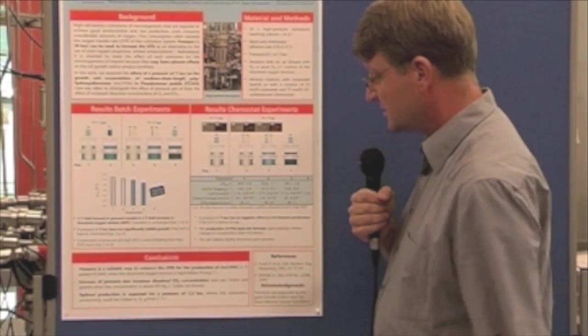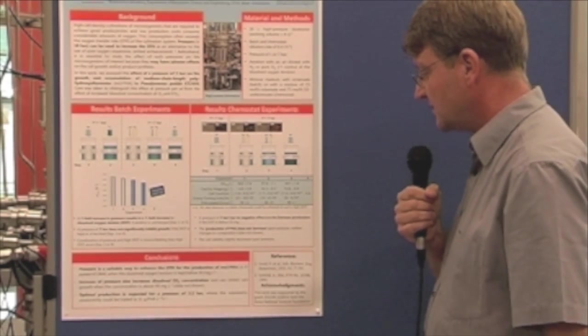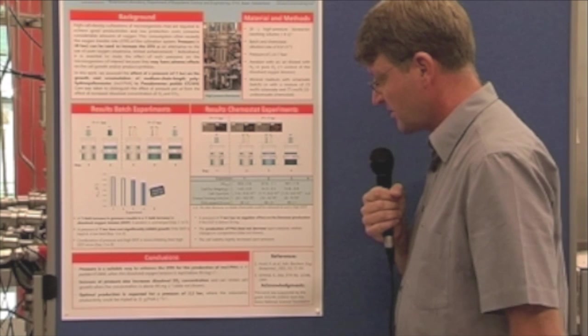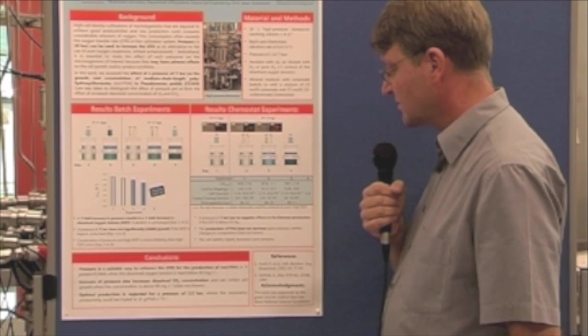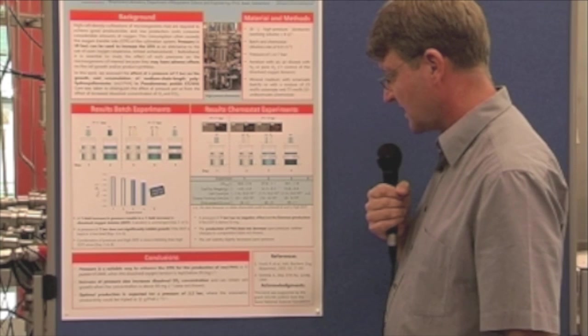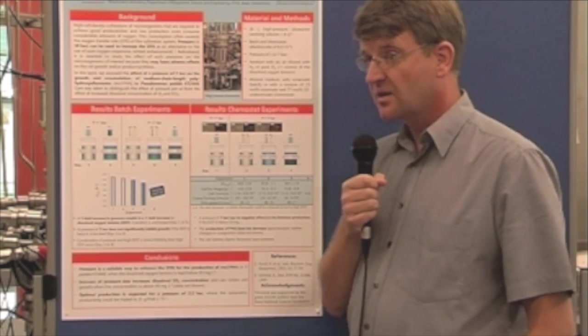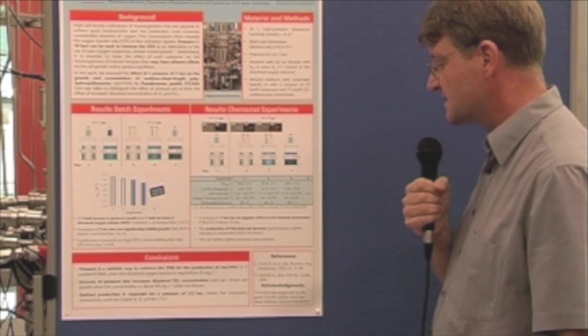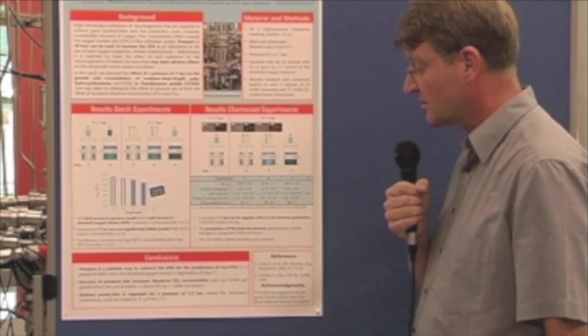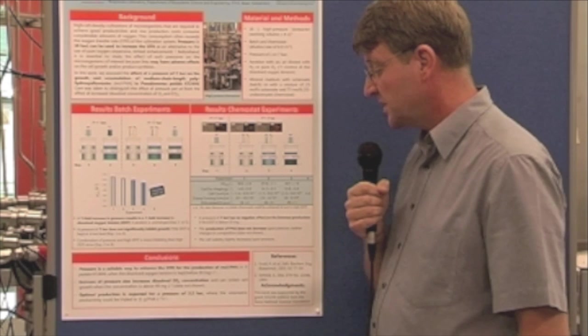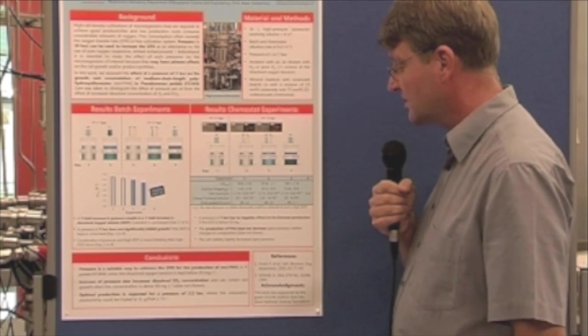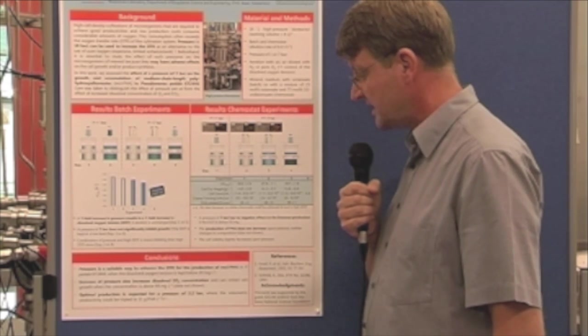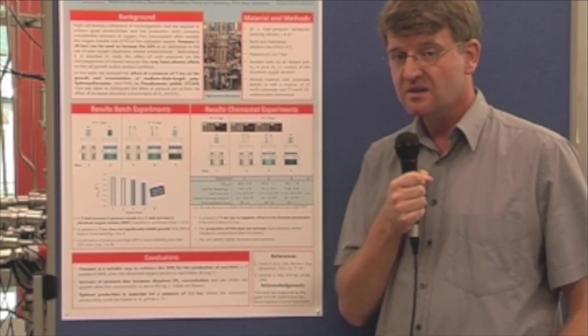To conclude, we found that when you control the pressure in a certain range, we can have good productivity and oxygen transfer suitable for high cell density fermentations. Actually, we could triple the PHA productivity to 11 grams PHA per liter and hour.